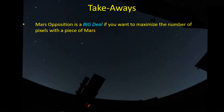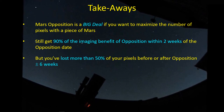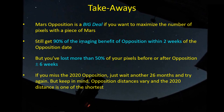What do we take away from this? Mars opposition is a big deal if you want to maximize the number of pixels in your imaging camera with a piece of Mars in it. You can still get 90% of the imaging benefit of opposition within about two weeks, plus or minus, of the opposition date. It's not that critical, but you do need to act fairly quickly because if you wait more than six weeks, then you've lost more than 50% of your imaging pixels. If you missed the 2020 opposition, you can just wait another 26 months or so and try again.